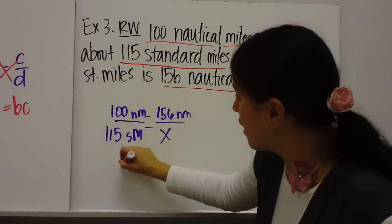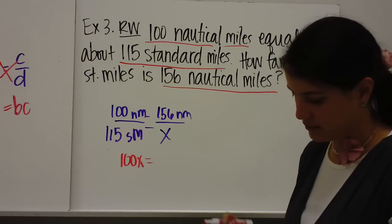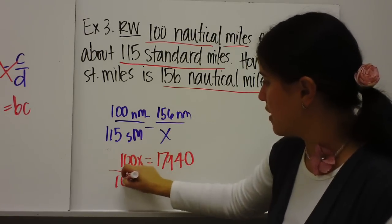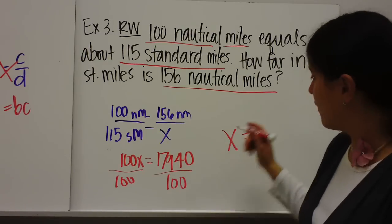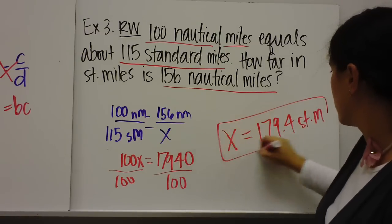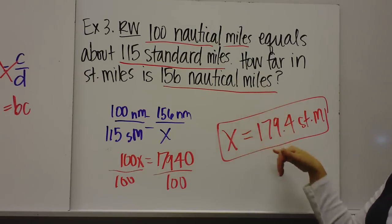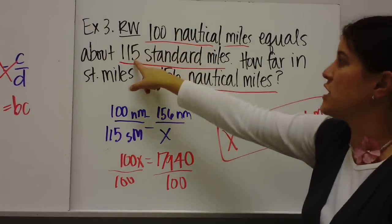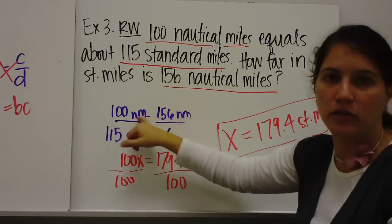So you cross multiply, 100x, 115 times 156. And then you divide that by 100. And this would equal 179.4 standard miles. So 156 nautical miles would equal 179.4 standard miles. So I took the ratio, 100 to 115, and then I put this on top because I have to keep my nautical miles together.